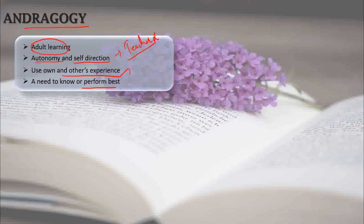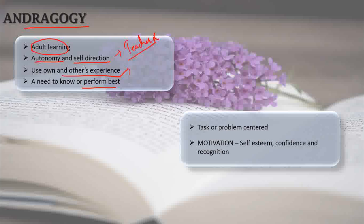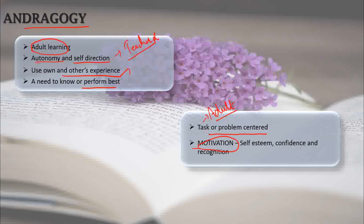In adult learning, there is a need to know or perform best. Adults are always task- or problem-centered in their learning. Their motivation factors are self-esteem, confidence, and recognition.